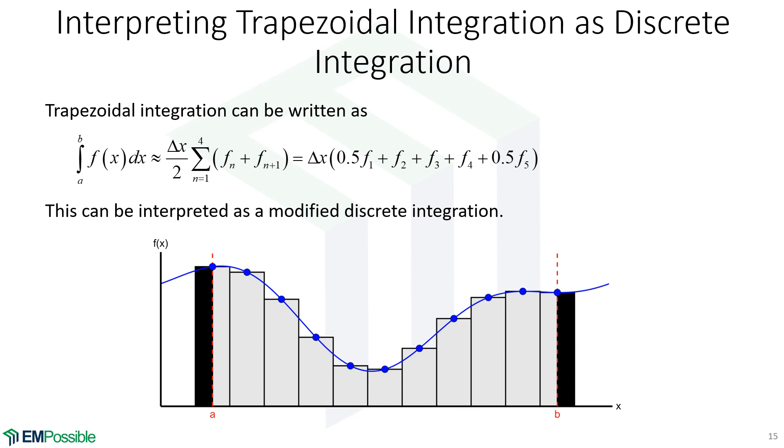All right. What about the error here? Let's draw the error and think about this. Let's look at a rectangle. Here's area that we have included in our integration that we shouldn't have for this rectangle. Here's an area that we have not included that we should have. Well, here we've overestimated. Here we've underestimated. These two tend to cancel. So within a rectangle, we tend to get roughly the same amount of positive and negative error. And so those cancel.